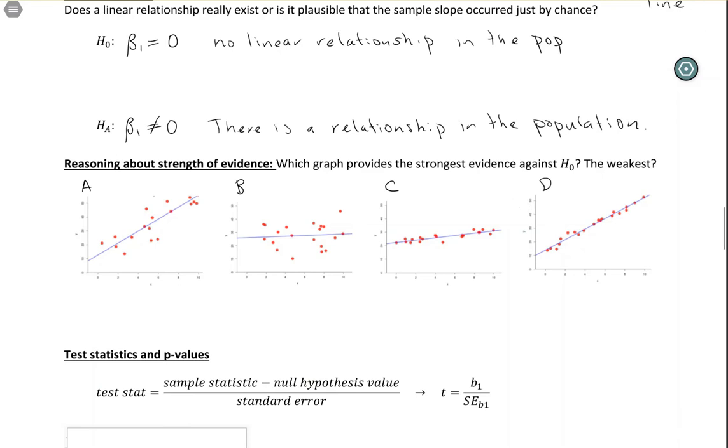Which graph provides the strongest evidence against the null hypothesis? That's D. There are two reasons: the steepness of the slope—this is a pretty steep slope. A and D both have steep slopes, but D has the points falling closer to the line, so it's even more clear there's this positive relationship.